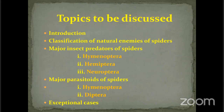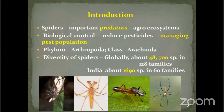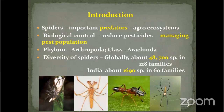Major parasitoids of spiders fall under Hymenoptera and Diptera. Finally, I'll discuss exceptional cases and explain why spiders are so important in nature — they are important predators in agriculture and horticulture ecosystems, acting as biocontrol agents. The consumption of pesticides can be reduced by managing pest populations this way. Spiders are potential predators of insects affecting crops.